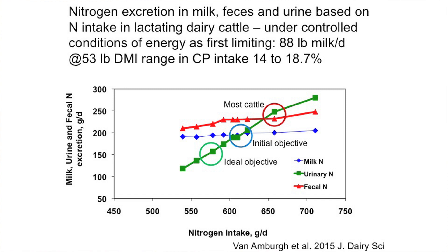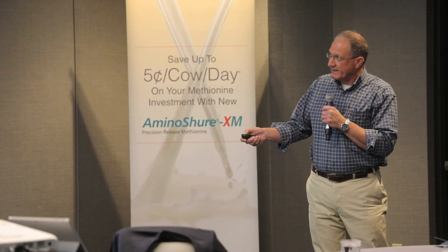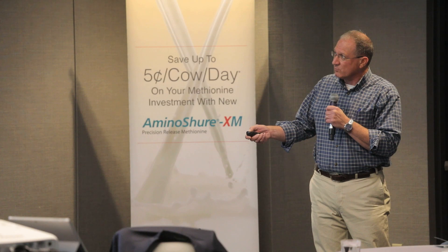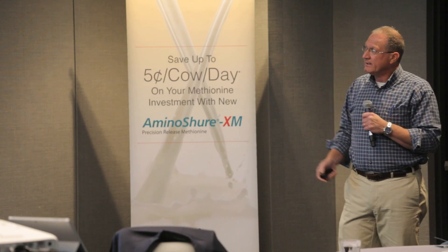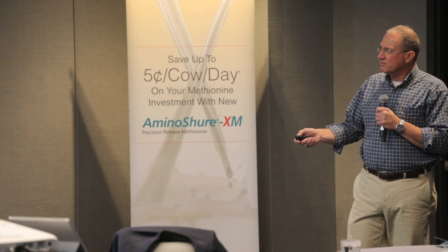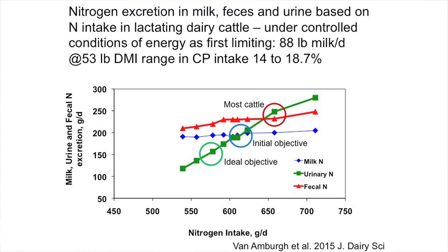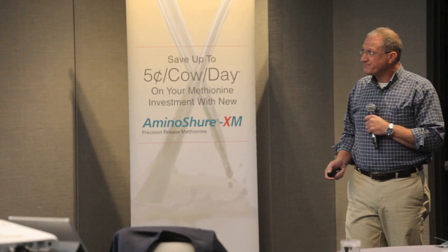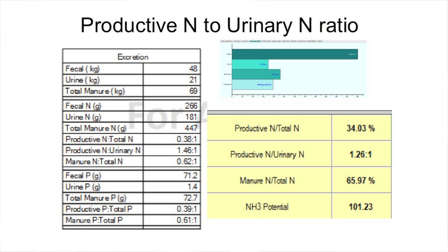If we're really on our game, we should be putting out a 1-to-something-to-1 ratio on milk to urine. As we do this, what we're really telling the cow to do is to be more efficient by recycling more nitrogen back into the system. And once you fix the energy — this is all energy is first limiting — you only need to feed about 14% protein according to these diets to meet that amount of milk output. We have this in the structure of CNCPS: productive N to total N at 34%, and productive N to urine N at 1.26 to 1.